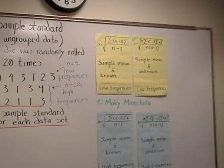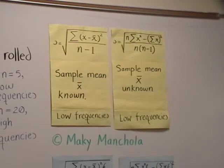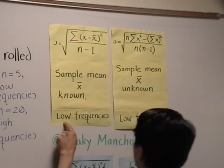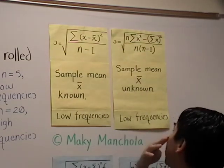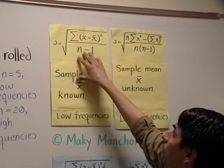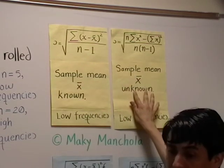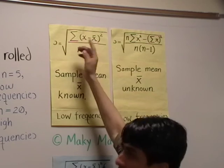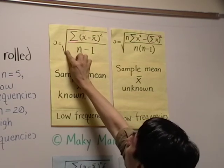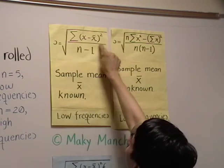Let's take a look at the different versions we have. The top formulae are suitable for data with low frequencies — both are formulae for sample standard deviation. The difference is that in one formula the sample mean x-bar is known. When x-bar is known, the formula is the square root of the sum of (x minus x-bar) squared, all over n minus one.